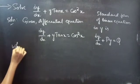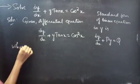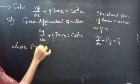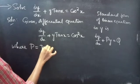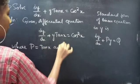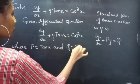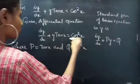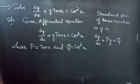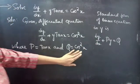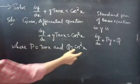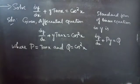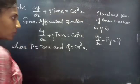Now, where P equals to tan x and Q equals to cos squared x. By comparing these two, we can say that P is tan x and Q is cos squared x, which are functions of x. Now, we need to find the integrating factor of the given equation.